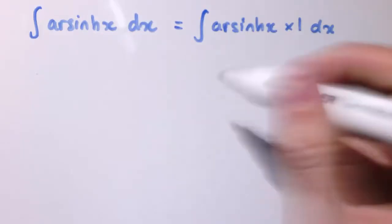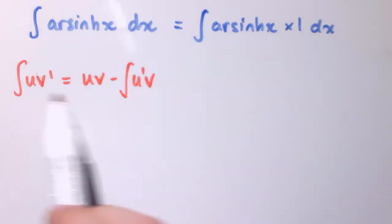This is helpful because if we apply the integration by parts formula, which you remember is something like this: the integral of uv' is u times v minus the integral of u'v.